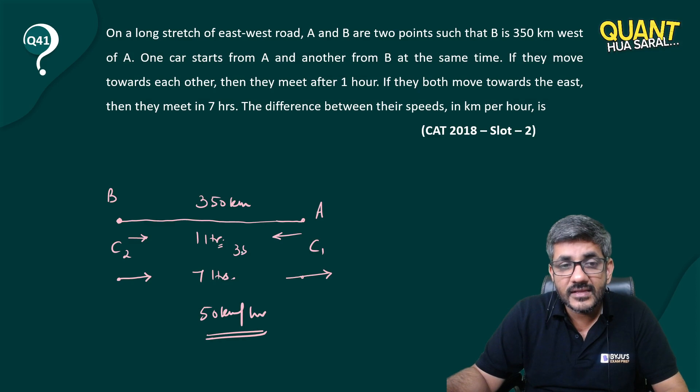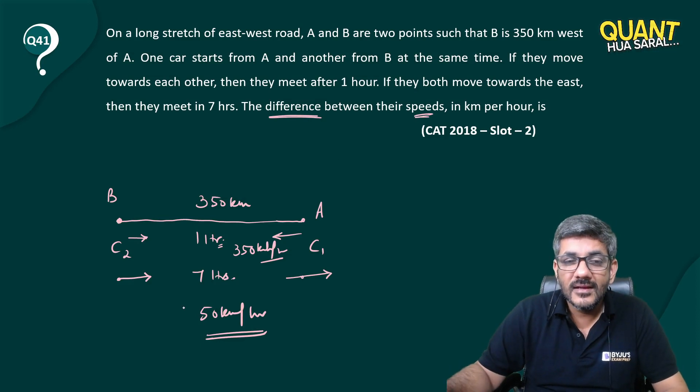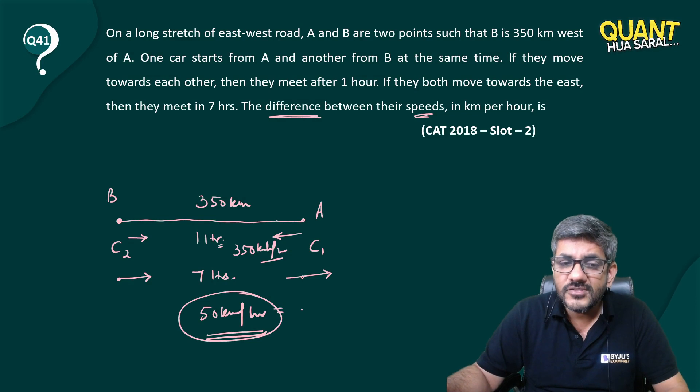So here the relative speed is 50 and here the relative speed is 350 kilometers per hour. The question is asking you the difference between their speeds, and when two people are moving in the same direction, isn't the relative speed actually the difference between their speeds only?